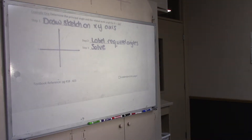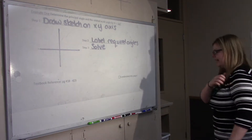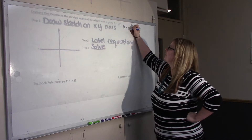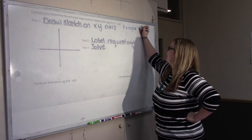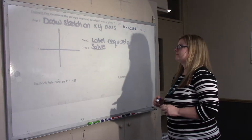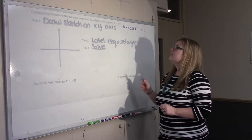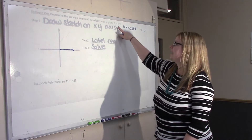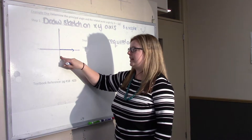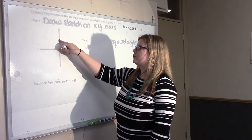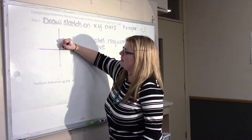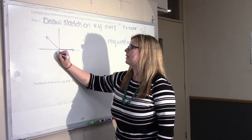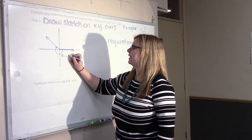Example one: determine the principal angle and the related acute angle of negative 225 degrees. The first thing you should notice is that it's negative, so theta is negative — therefore we're going in the clockwise direction. Draw a sketch on the x-y axis. Because theta is negative, I'm going this way: negative 90, negative 180, negative 270. It's somewhere between negative 180 and negative 270. Here's theta equals negative 225.